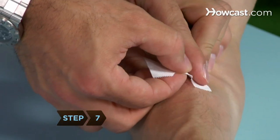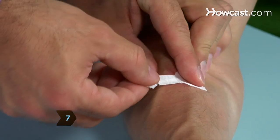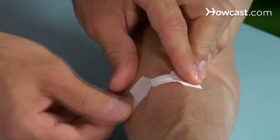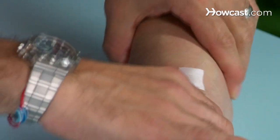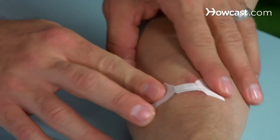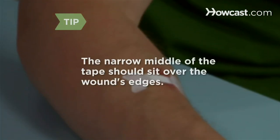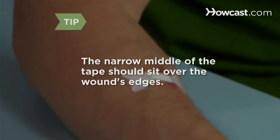Step 7: Apply the bandage by sticking one end of the tape on one side of the wound, gently holding the edges of the wound together, pulling the tape across the wound, and sticking its other end in place. The narrow middle of the tape should be positioned over the edges of the wound.